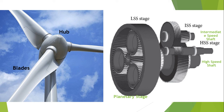Wind turbines will usually be shut down if the wind is blowing too hard — for example, roughly at 55 miles per hour. This mechanism ensures that the wind turbine equipment is prevented from being damaged at high wind speeds.